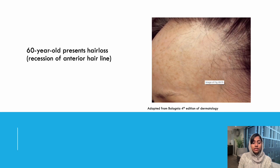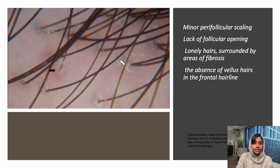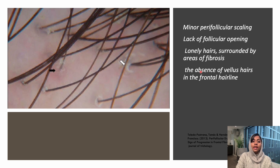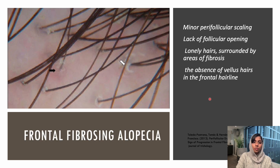The next scenario: a 60-year-old female comes with hair loss and recession of the frontal hairline. On trichoscopy, you can see perifollicular scaling which is very classical in almost all the follicles. Features include perifollicular scaling, lack of follicular openings seen as empty spaces, and lonely hairs — hairs surrounded by areas of fibrosis — as well as absence of vellus hairs in the frontal area. This is a specifically characteristic feature of frontal fibrosing alopecia.